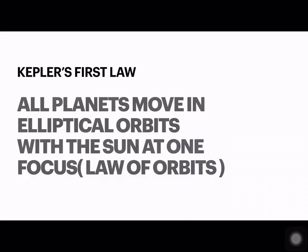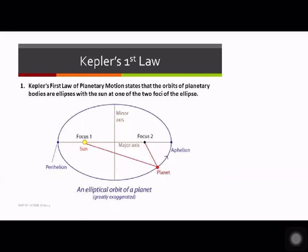According to the first Kepler's Law, all planets move in elliptical orbits with the sun at one focus. We call this the law of orbits. If you see this diagram, there are two orbits that together form a larger elliptical orbit.